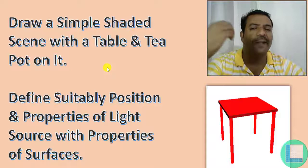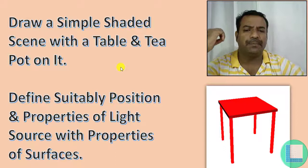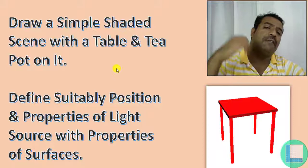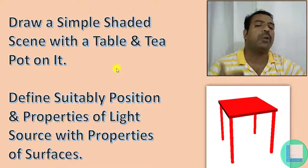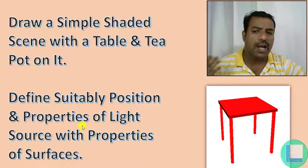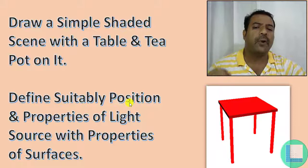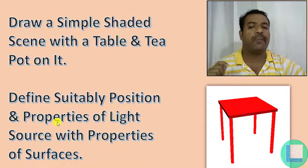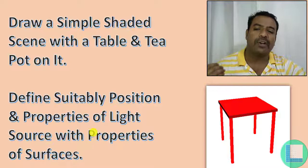This program will help you understand how to bring in the concept of shading - the lighting property and the material property into the scene. To implement simple shading in OpenGL, we need the properties of the light source as well as the properties of the surface. We'll find the appropriate position for the light along with its properties and the surface properties.